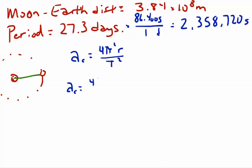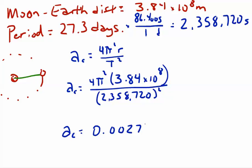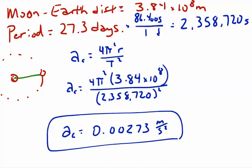Plugging into centripetal acceleration equals 4 pi squared times r divided by T squared, the answer comes out to 0.00273 meters per second squared. That is the acceleration of the moon in its orbit, directed towards the center of the circle — in other words, the moon is accelerating towards the Earth.